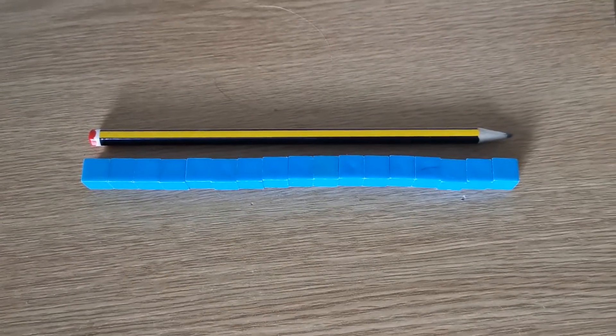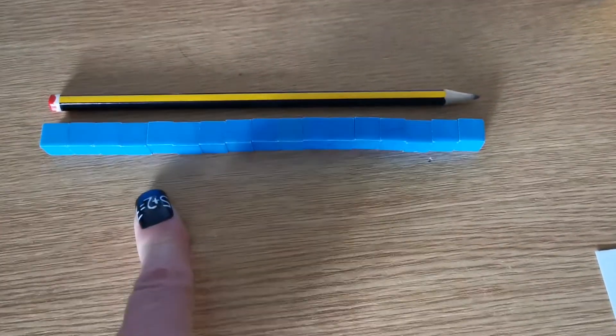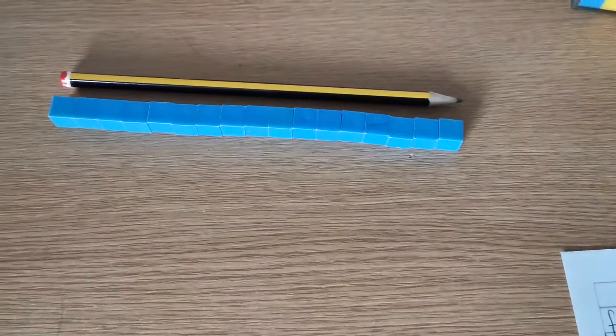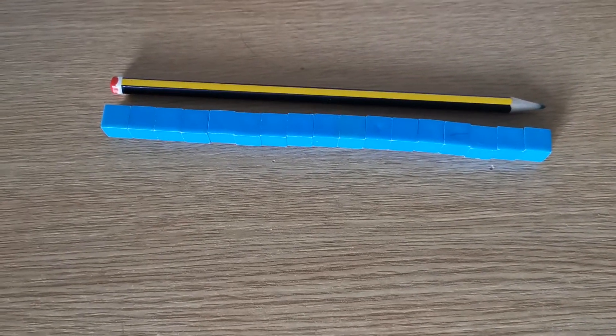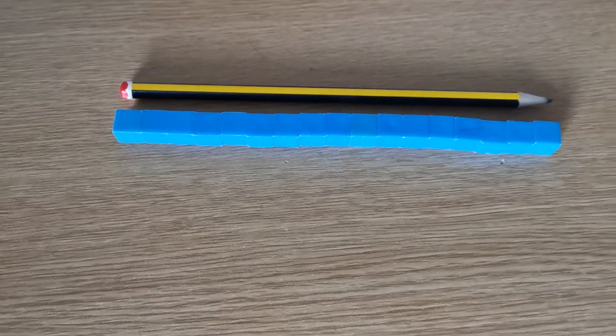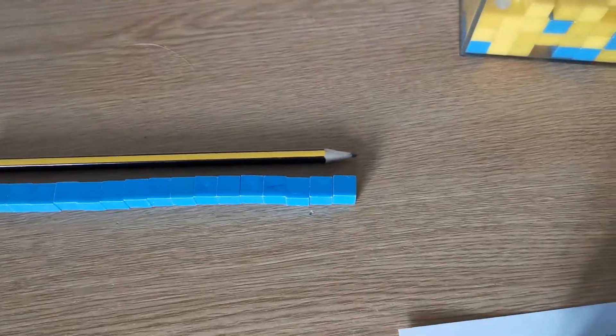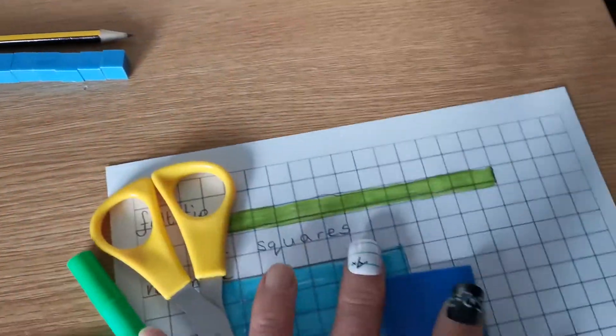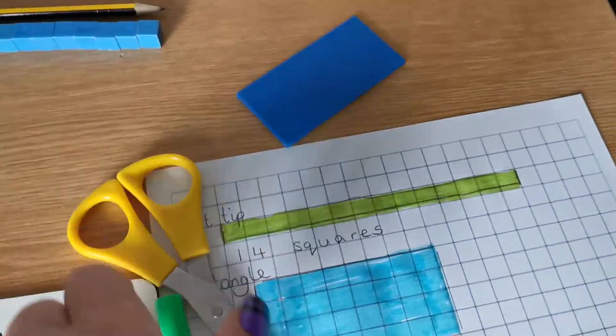Now, don't worry if you haven't got any kind of cubes or anything that you could use like this. Because what you can use instead is squared paper. Now, I've attached some squared paper to this video, to your maths for today. So you can print it out. You might already have some at home. And I'll show you what to do with the squared paper. You could do this as well. If you have got cubes, you could do this as well.